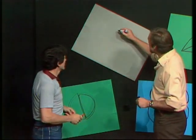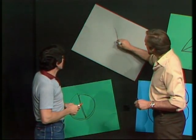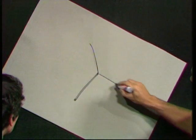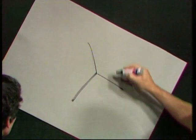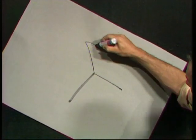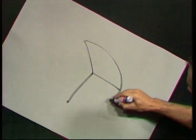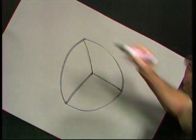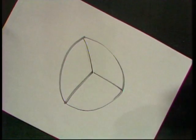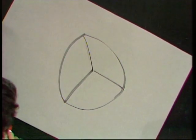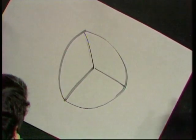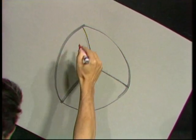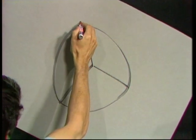Try this one, okay? There's a three-pointed star and a circle around like that. Same rules - you can't take your pen off the paper, and you can't go over the same line twice. You can't go backwards? Nope, it's the same line twice.